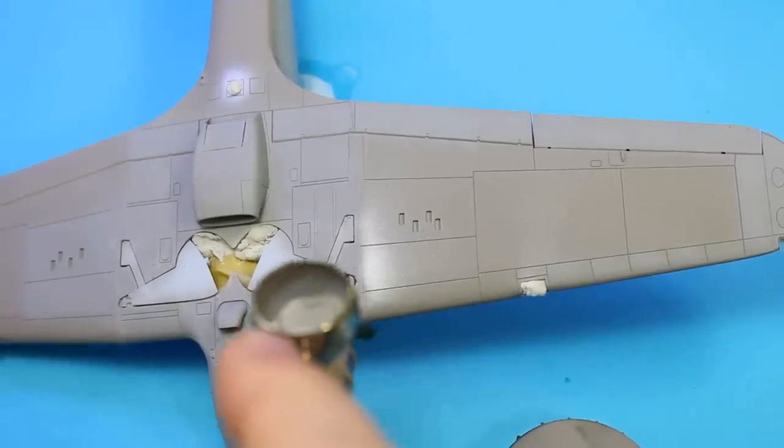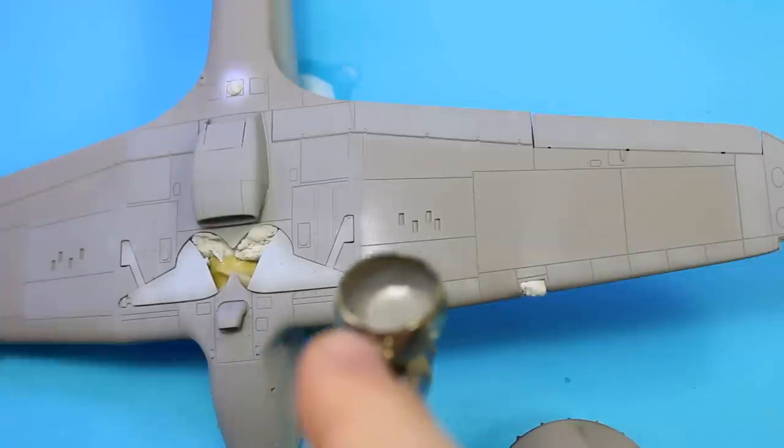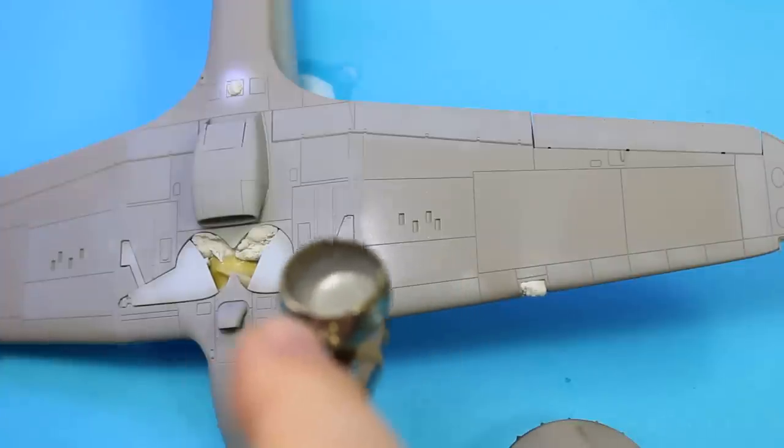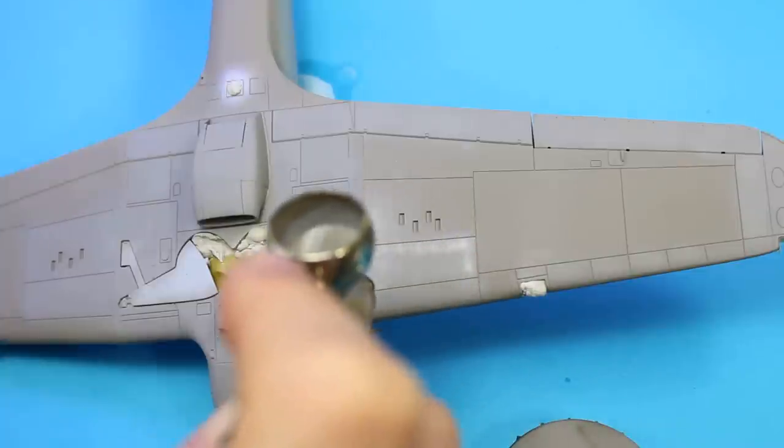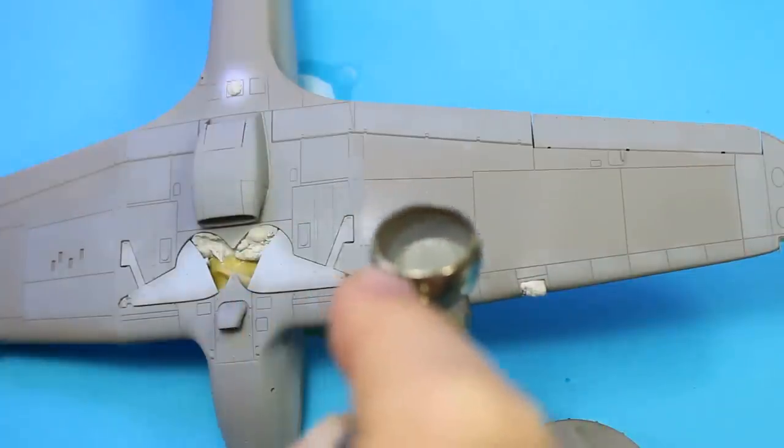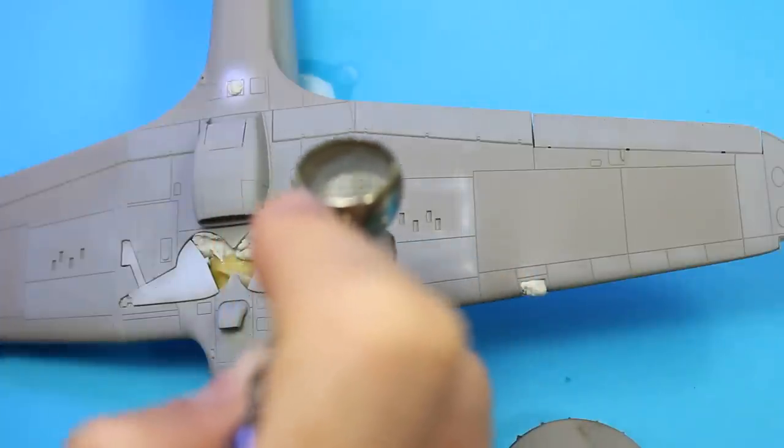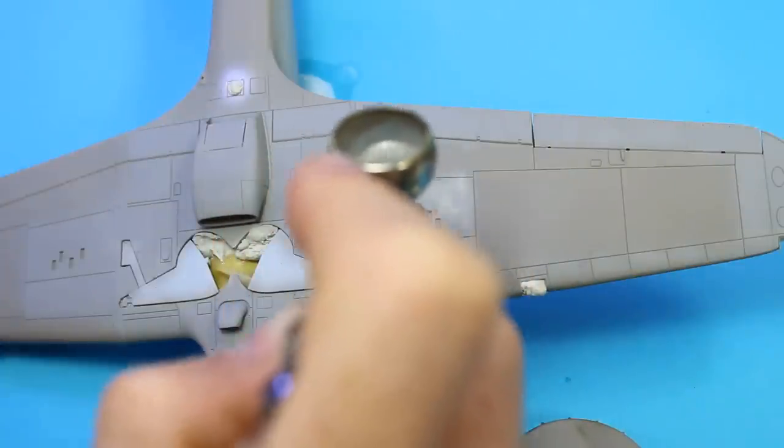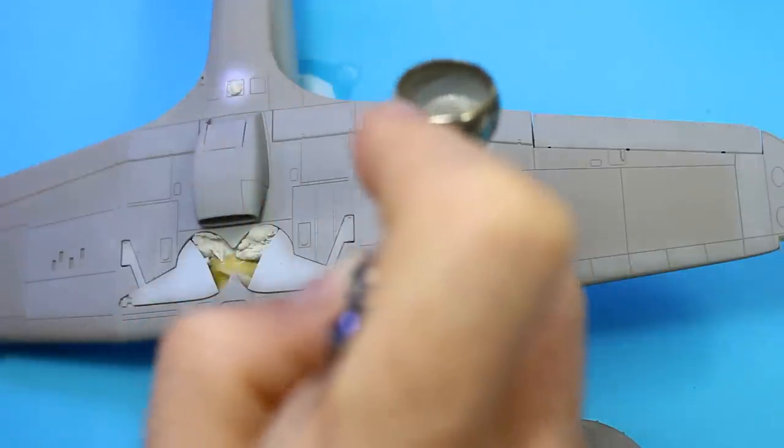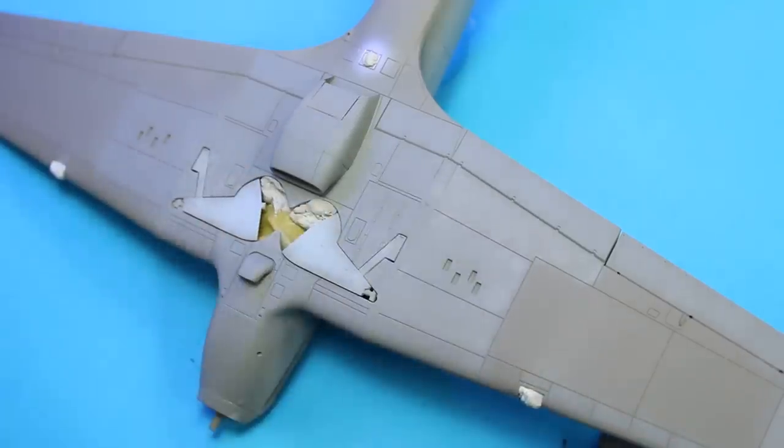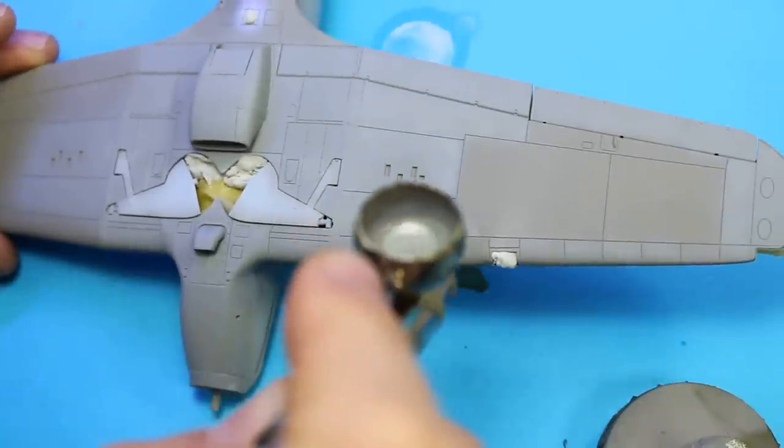Now ready to go into the primer stage. I've primed it and checked any of the seams - reasonably happy with most things. Where I used a bit of filler on that horizontal stabilizer, I wasn't too happy with it, so I went over again with super glue. The underside of this one is sky gray, so I've used Tamiya XF19 straight out of the bottle over a medium gray base.